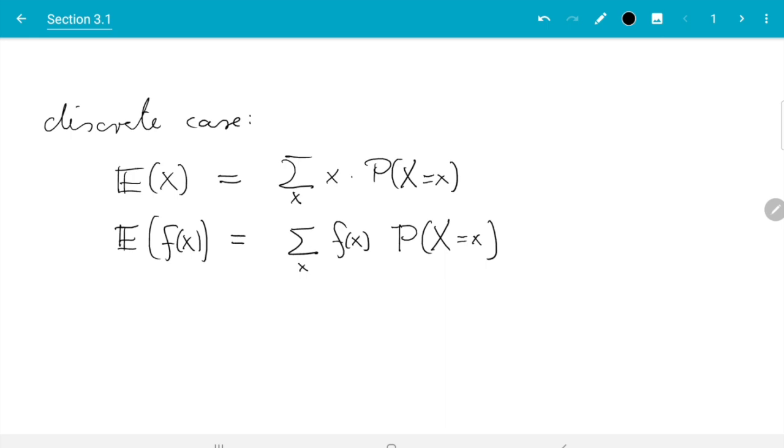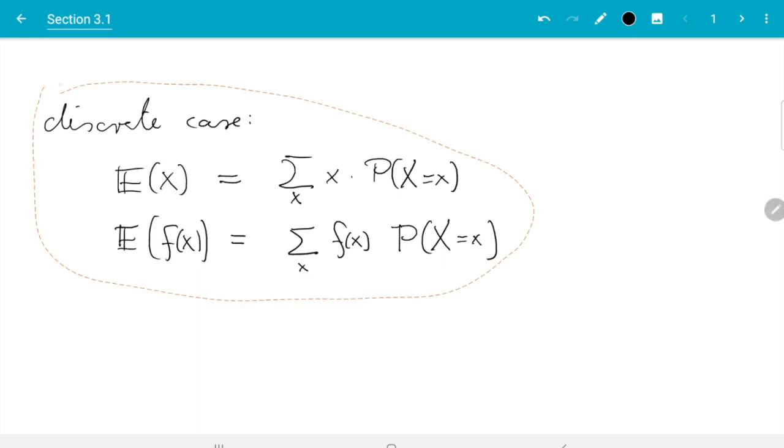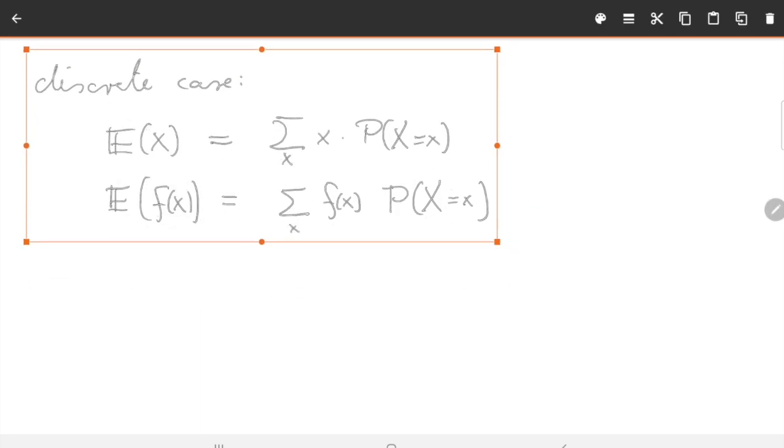So the probability of getting this value is still the probability that the random variable equals little x. So this is what we get for the discrete case.